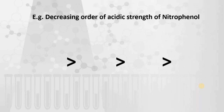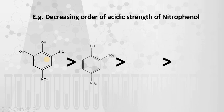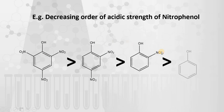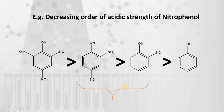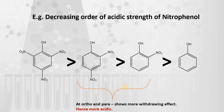For example, the decreasing order of acidic strength of nitrophenols is: 2,4,6-trinitrophenol (also called picric acid) is most acidic, then 2,4-dinitrophenol, then 2-nitrophenol, and simple phenol is least acidic. The ortho and para nitro substituents show more electron withdrawing nature, stabilizing the negative charge on oxygen, making those phenols more acidic.